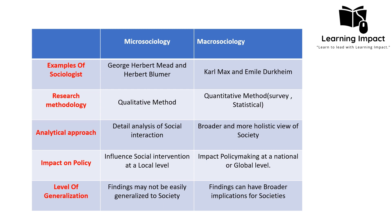Both micro sociology and macro sociology are important branches of sociology that analyze society, but their approach to analysis differs. In micro sociology, the analysis of social interaction is detailed because it operates at a narrow range, making it possible for a micro sociologist to conduct detailed analysis. In macro sociology, because its range is wide, a detailed analysis is often not feasible, so it mostly provides a broader and more holistic view of society.